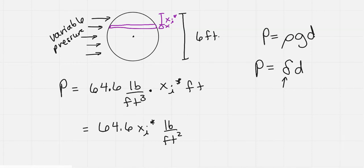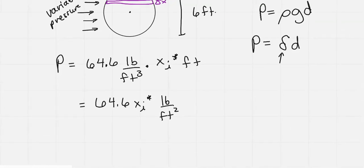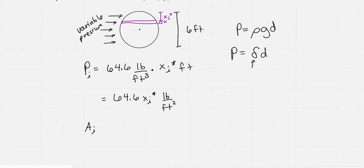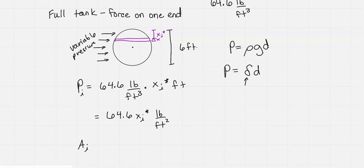Now the area of that little rectangle, the area of the ith slice, this is where the area can get a little complicated. This is where you have to use similar triangles, Pythagorean theorem. Sometimes the complexity of the problem comes into play. I know it has a diameter of 6 feet.